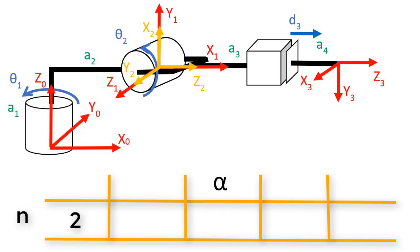For the second row, I substitute n equals 2. Alpha is the amount that we have to rotate frame 1 around axis x 2 in order to get axis z 1 to match axis z 2. Z 1 is coming out of the page towards us, and z 2 is pointing to the right. So we need to rotate frame 1 90 degrees. Taking our right hand and putting our thumb in the direction of x 2 pointing up, our fingers curl around to the right, which is the direction we need to move z 1. So the 90 degrees here is positive.